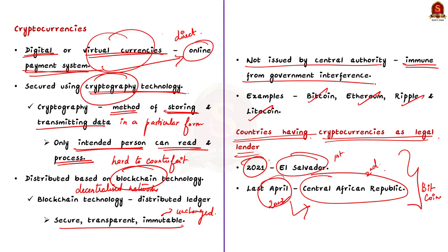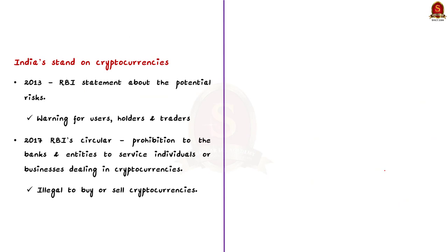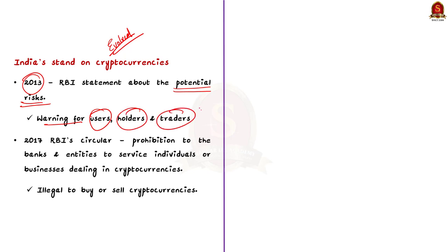Now, before concluding our discussion, let us understand some points about India's stand on cryptocurrencies. India's stand on cryptocurrencies has evolved from time to time. In 2013, the RBI issued a statement about the potential risks associated with the use of cryptocurrencies to warn users, holders and traders. Then in 2017, RBI issued a circular prohibiting banks and other regulated entities from providing services to individuals or businesses dealing in cryptocurrencies, effectively making it illegal for Indian residents to buy or sell cryptocurrencies.